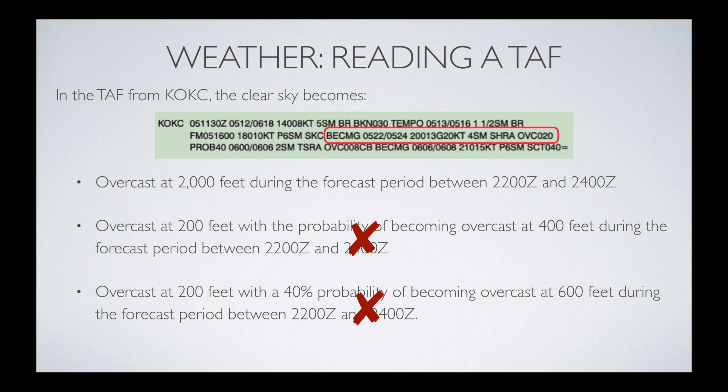So we know the first answer is correct. As I've been saying all along, OVC020 means overcast layer at 2,000 feet — you knock off those last two zeros. That's the correct answer. If you found this video helpful, please go ahead and hit the subscribe button and give me a like on the video.